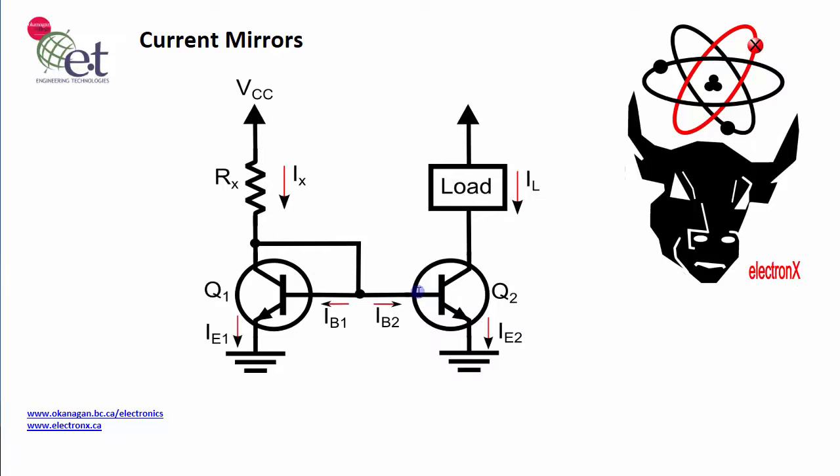These two transistors need to be kept in the active region, but as long as they are in the active region, then the current IL will be approximately equal to the current IX. And typically these current mirror circuits are used in integrated circuits because the characteristics of Q1 need to be identical to, or nearly identical to the characteristics of Q2.